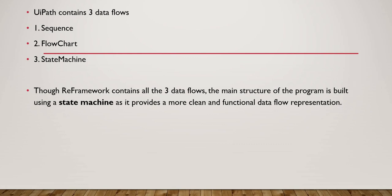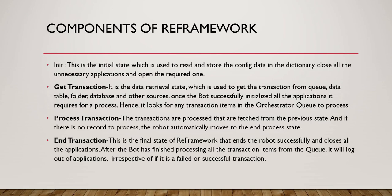We will look into the State Machine in further videos. In this video, we simply understand how the RE Framework works. The Init State is the initial state used to read and store config data in a dictionary, close all unnecessary applications, and open required ones — similar to how .NET Core reads data from app settings and stores it in a container. When the process starts in the RE Framework, it reads and stores the config data as dictionary key-value pairs.